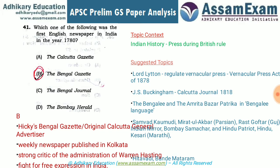Question 41 asks which of the following was the first English newspaper in India, published in 1780. All the options are names of English journals, and the correct answer is Bengal Gazette. It was started by Hicky, and is also known as Hicky's Bengal Gazette or Original Calcutta General Advertiser. It was a weekly newspaper published from Calcutta.